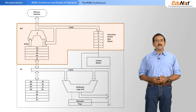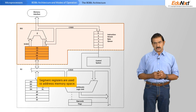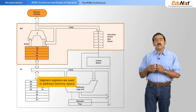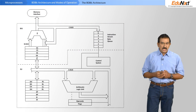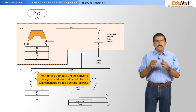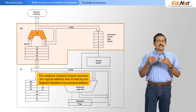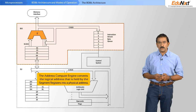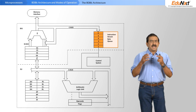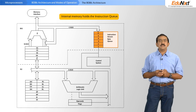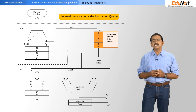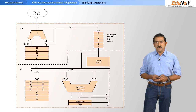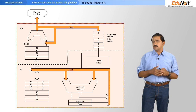Moving to the bus interface unit, you first have a set of segment registers. These segment registers are used to address memory space — either ROM, RAM, or IO space. There is an address compute engine within this which converts the logical address held by the segment registers into a physical address exposed to the outside world. There is also a set of internal memory that holds what is called the instruction queue. All of this accesses the outside world through an address bus, the data bus, or the IO ports.